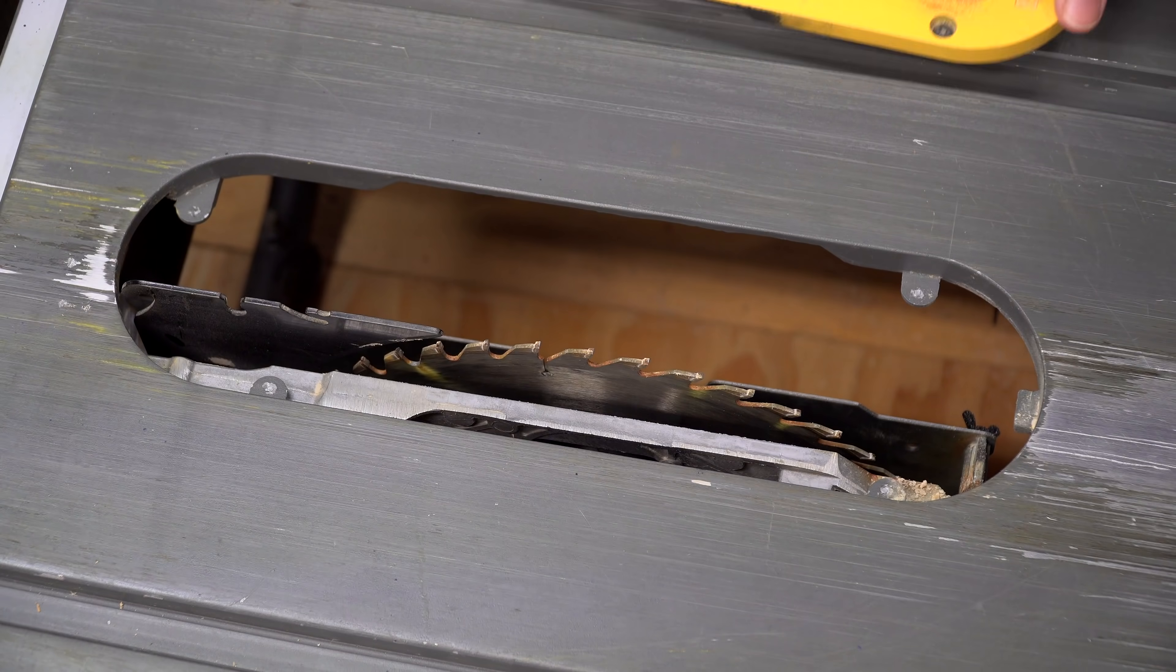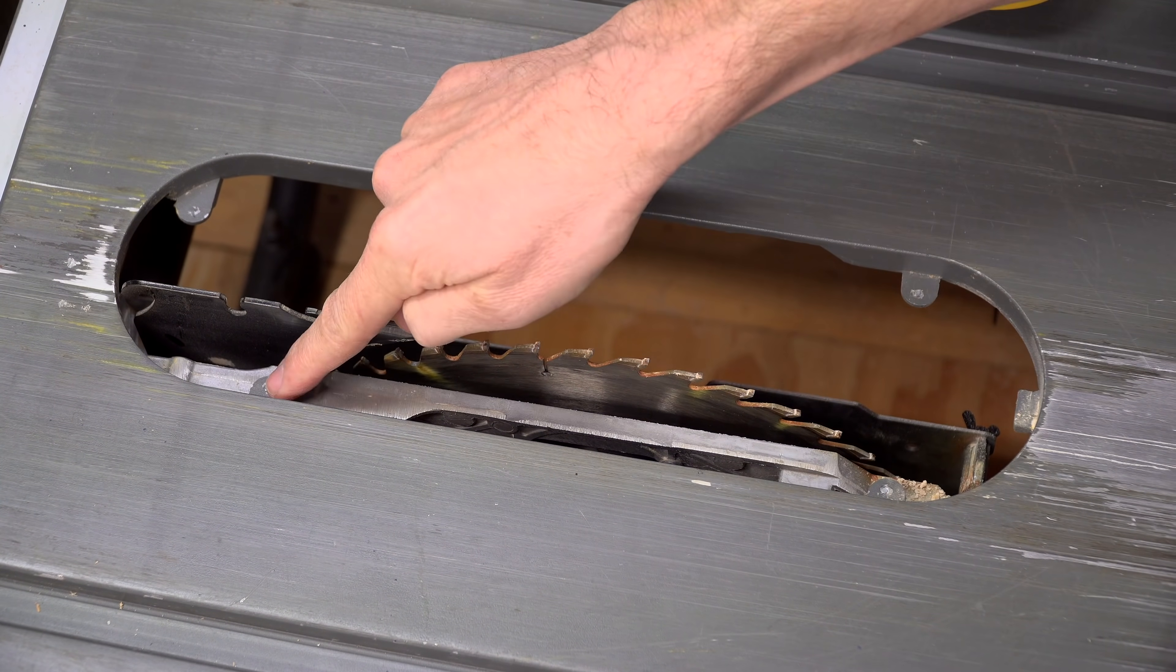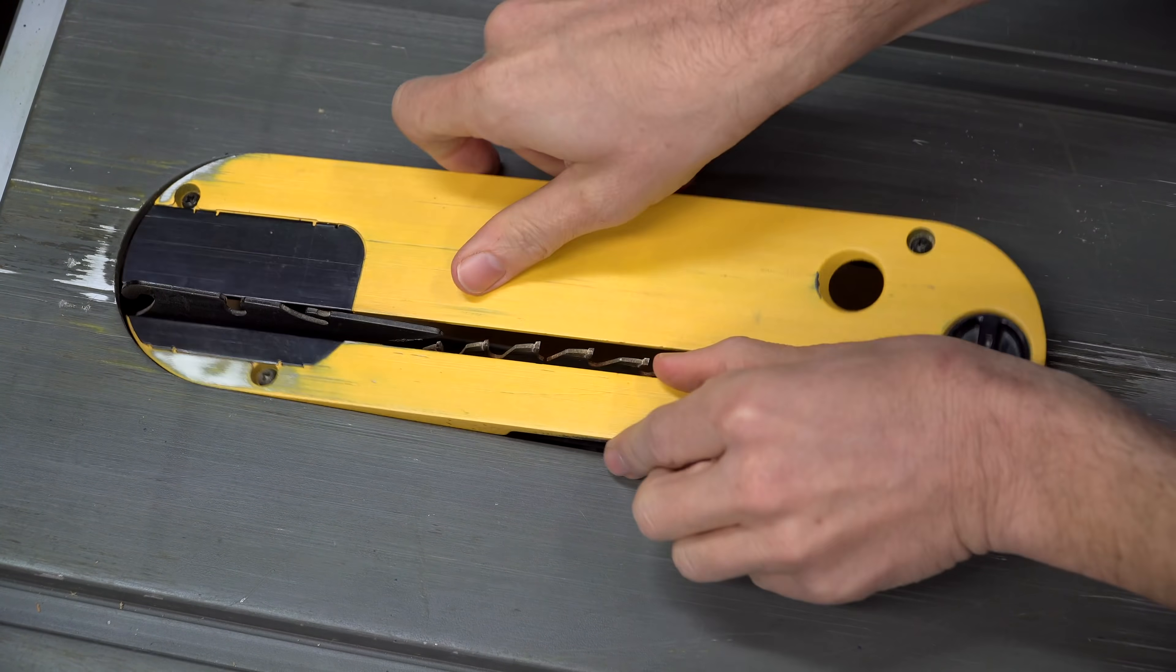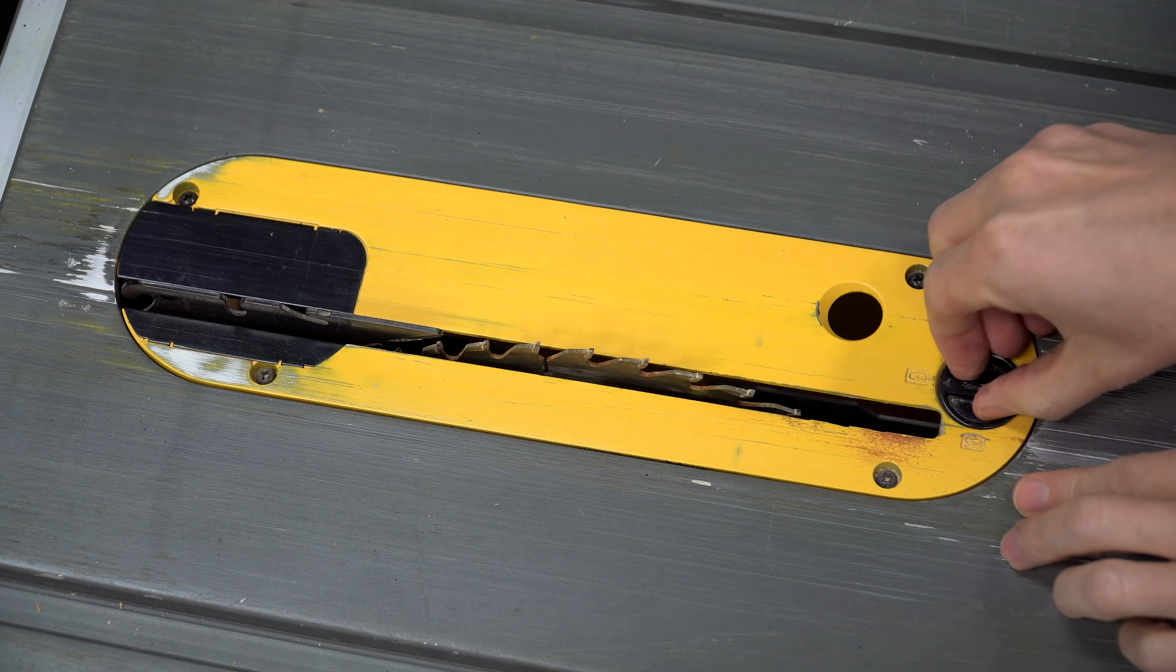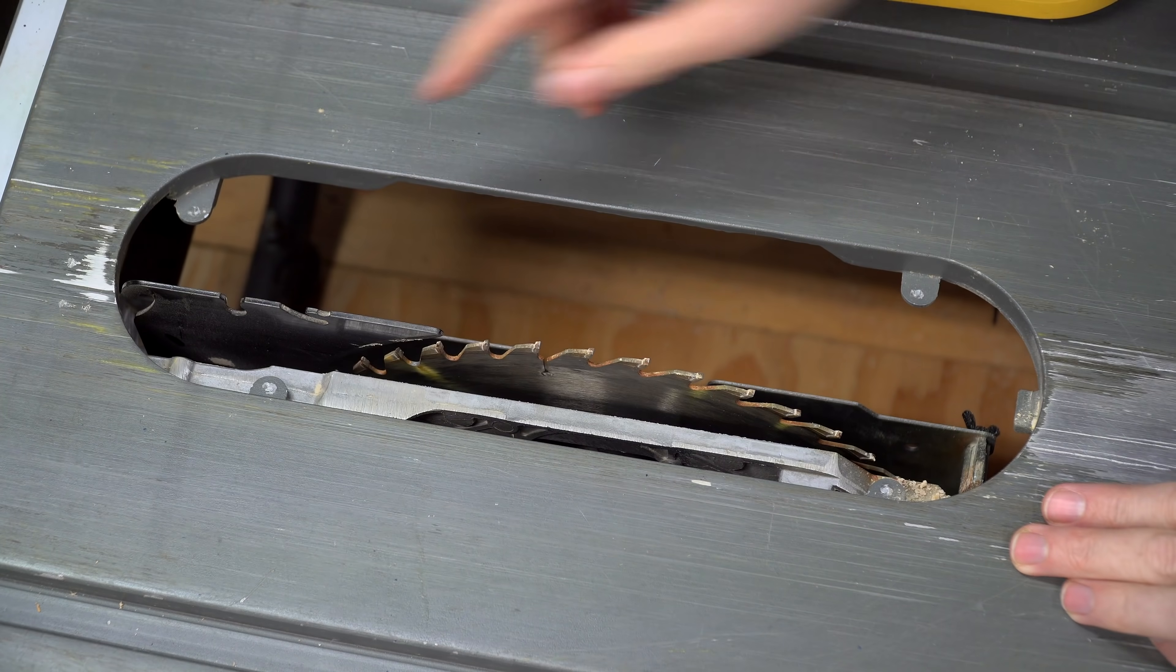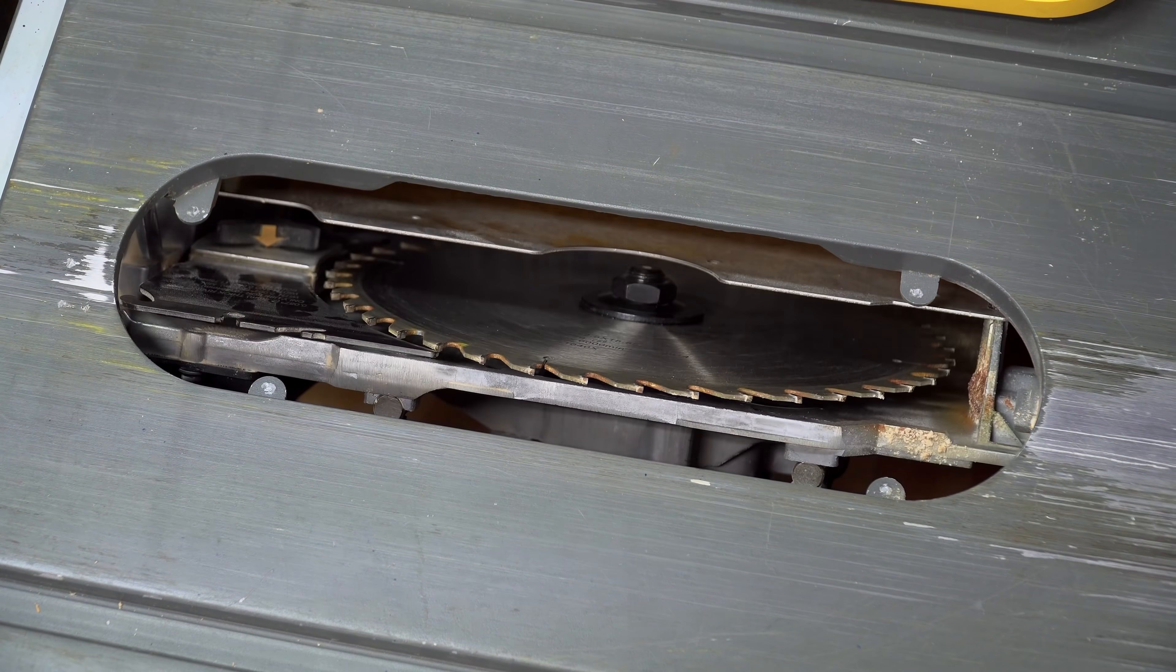Part of the problem is that there are not enough of these tabs. There should be at least one more near where the pieces exit, but there's not enough room because if there were one there, it would prevent the saw from being able to swing into position for making angled cuts.